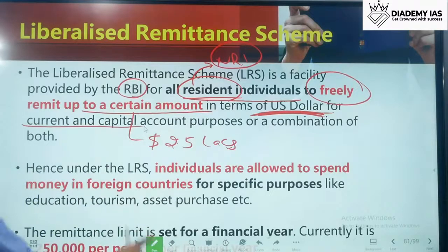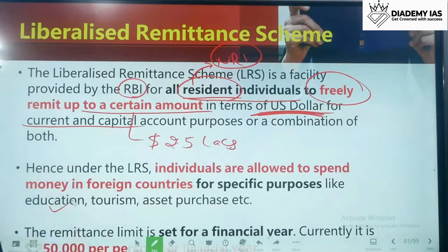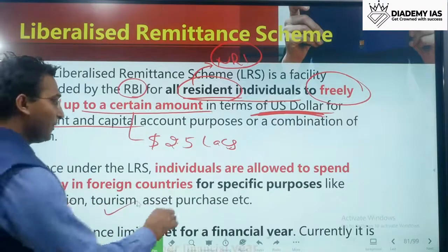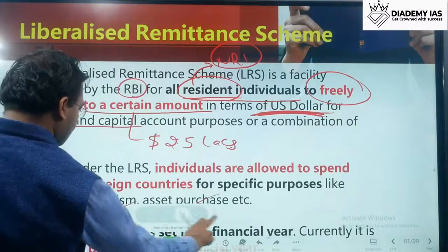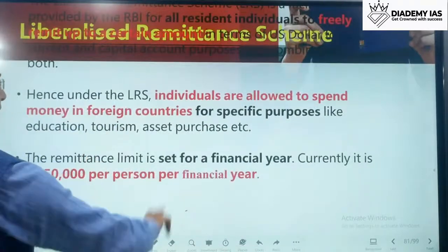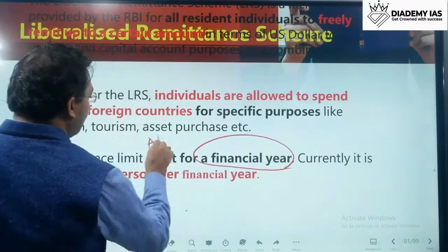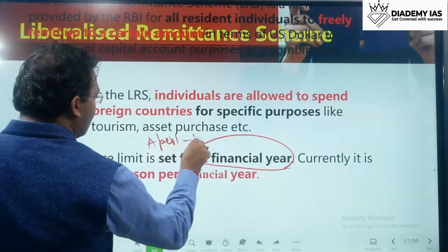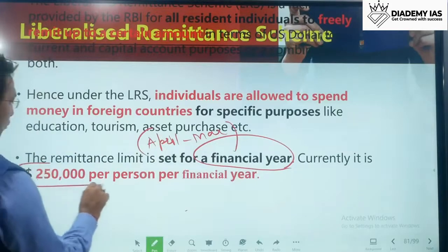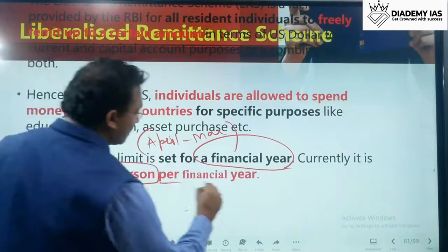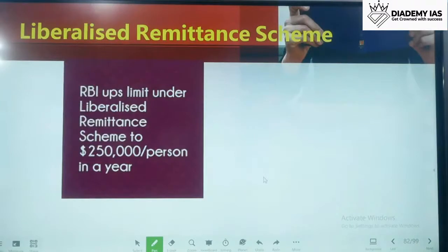Under LRS, individuals are allowed to spend money in foreign countries for specific purposes like education, tourism, and asset purchase such as buying property outside India. The remittance limit is set per financial year — a period of 12 months from April to March of the next year. Currently it is US dollar 2.5 lakh per person per financial year.